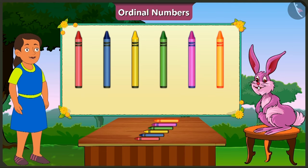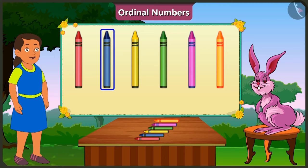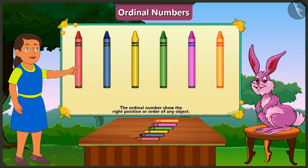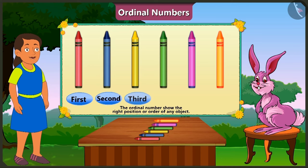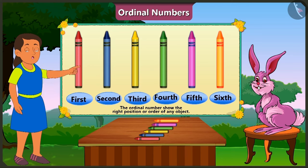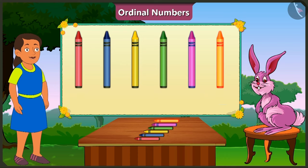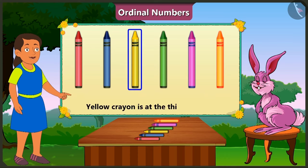Means, if we want to count objects, we have to say 1, 2, 3. And if we have to tell the position or place of objects in a line, then we have to say 1st, 2nd, 3rd — ordinal numbers. So here, the yellow crayon is at the third position.